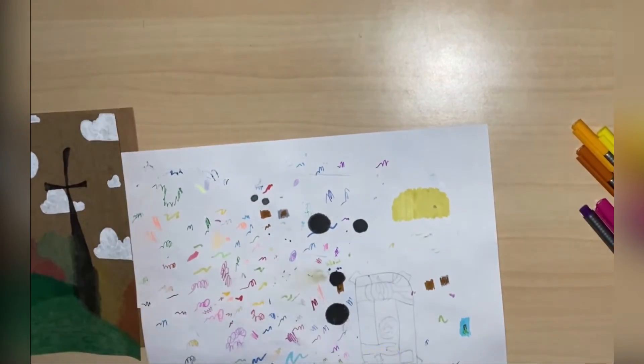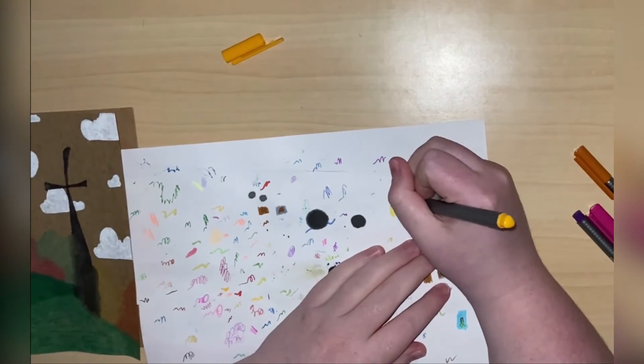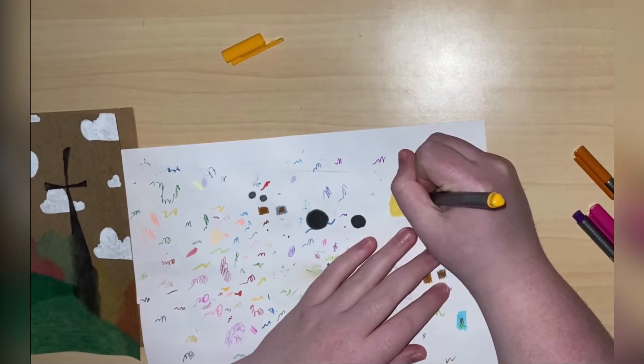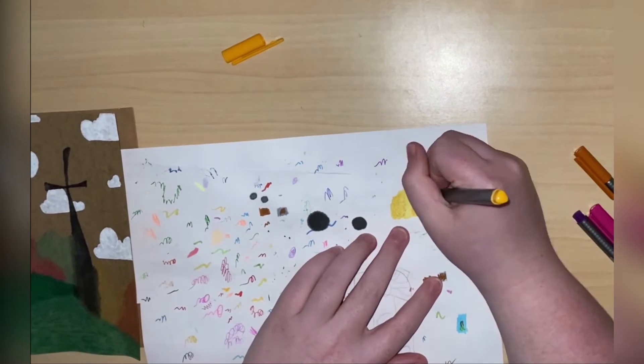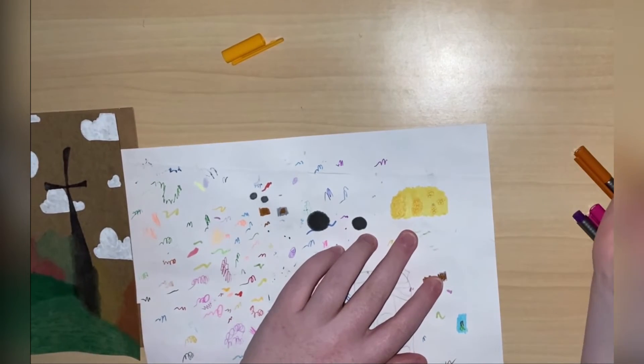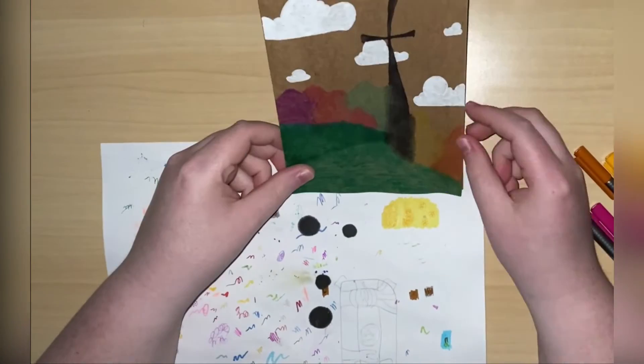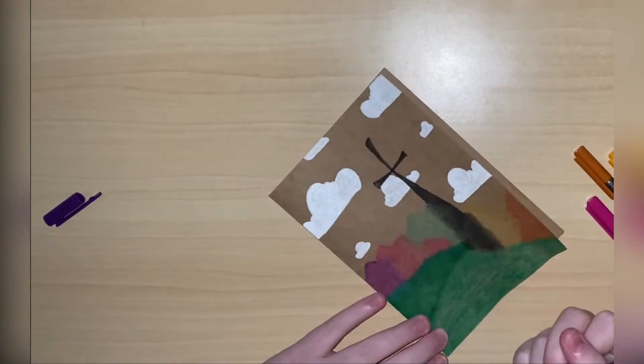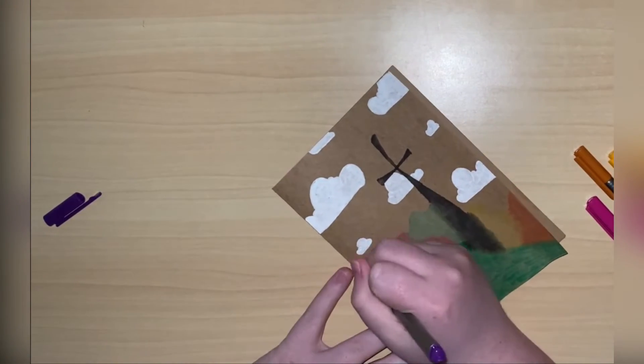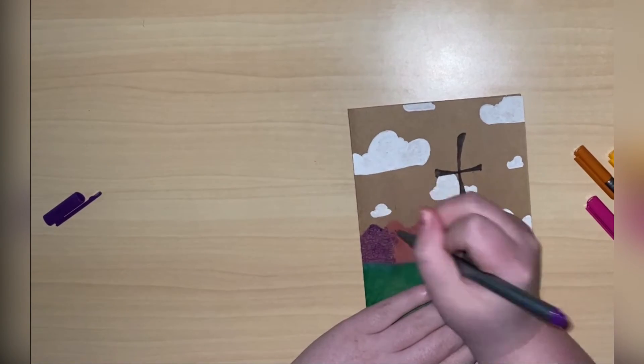I wanted to add some more details to the flower bushes, so that's what I'm doing here. I wasn't really sure what type of texture I wanted on the flower bushes. That's kind of what I'm doing here, trying to figure out which texture looks the best. I ended up going with this one.